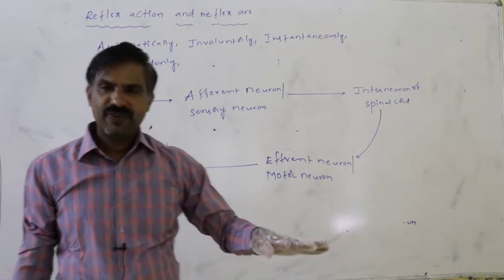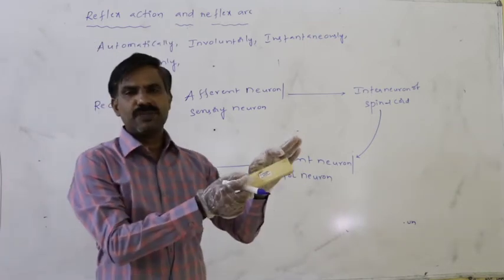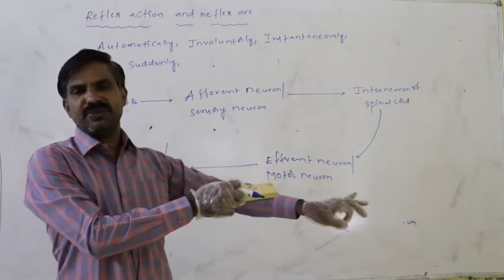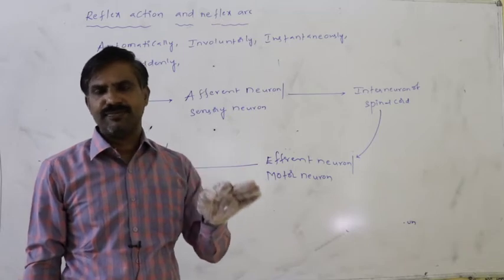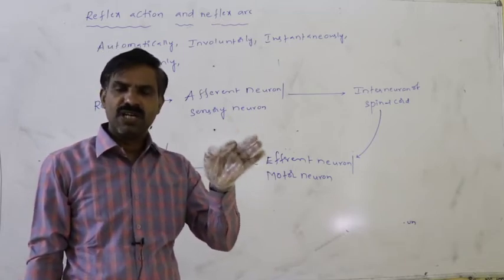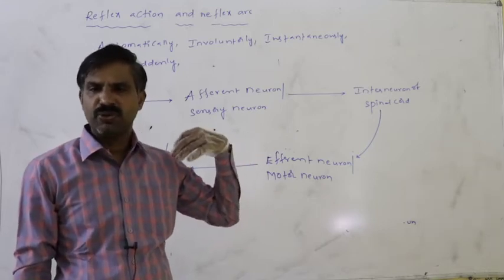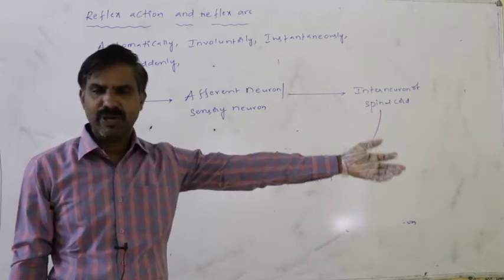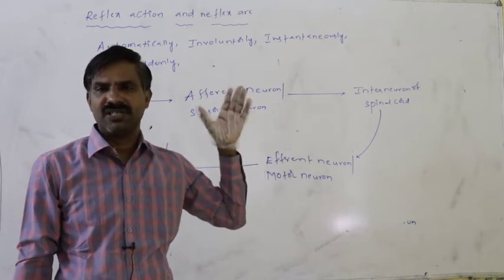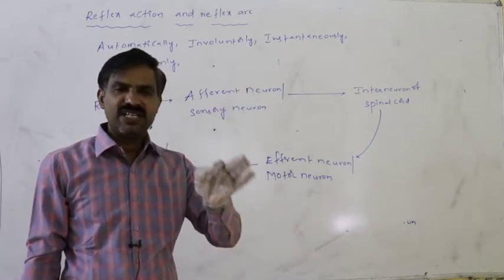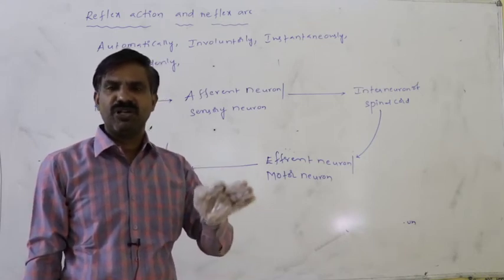For example, if our hand touches a hot object, the receptor present in the hand immediately passes the message to the sensory neuron. From there it reaches the spinal cord, where it is analyzed and motor information is generated. That motor information is conducted to the motor neuron, which reaches the muscle of the hand, causing the muscle to contract — and we withdraw our hand from the hot object. Reflex actions occur within a fraction of seconds without our conscience to protect our body from danger.